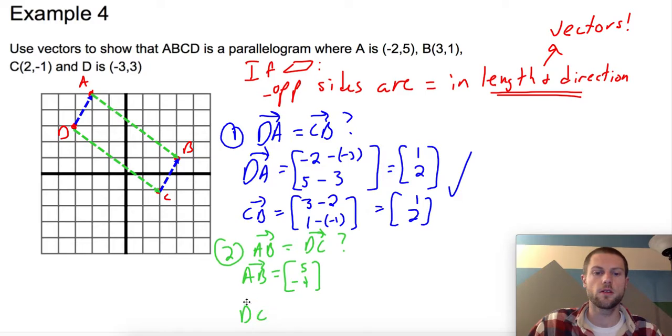And vector DC is over 1, 2, 3, 4, 5. So far, so good. And once I'm over 5, do I go down 4? 1, 2, 3, 4. Hey, what do you know? I go down 4. So that means that vector AB is the same as vector DC. What does that mean? That means that ABCD is a parallelogram. Hooray!